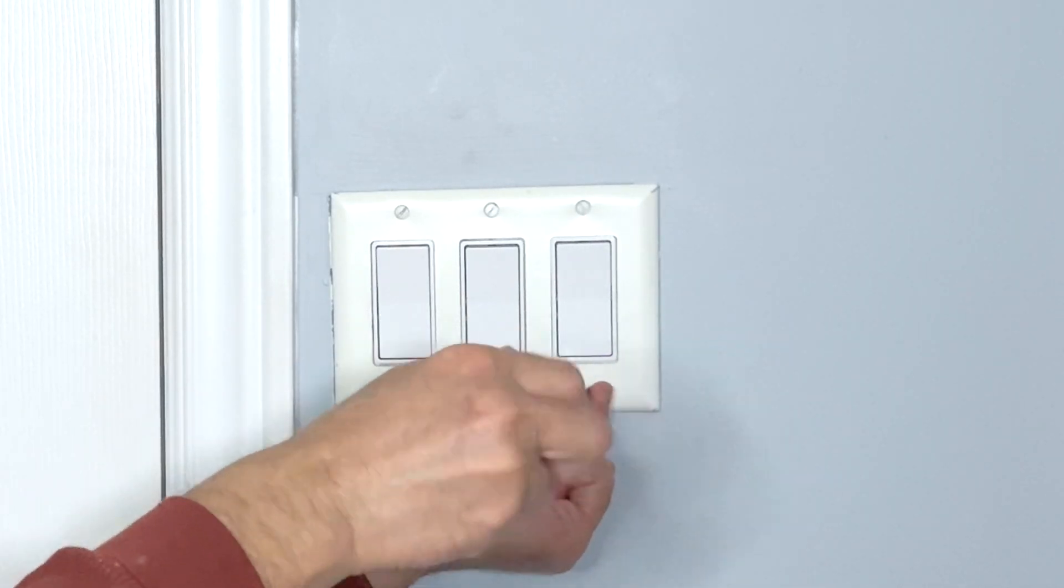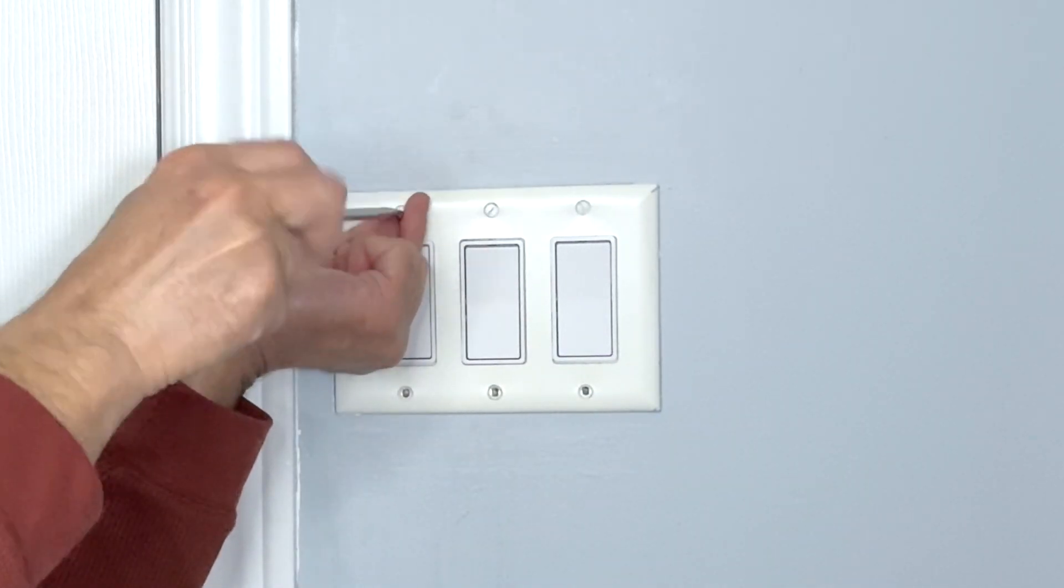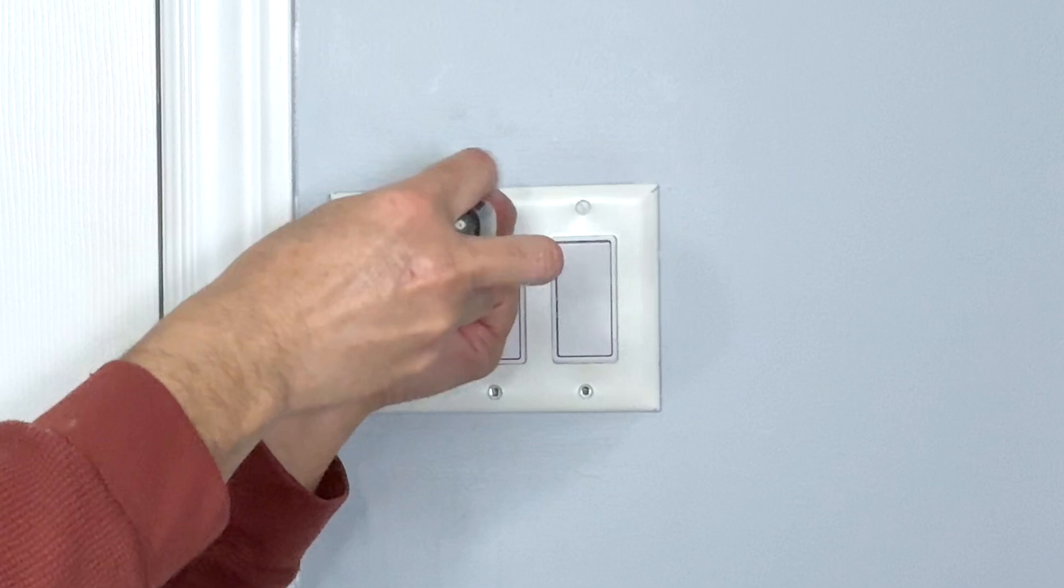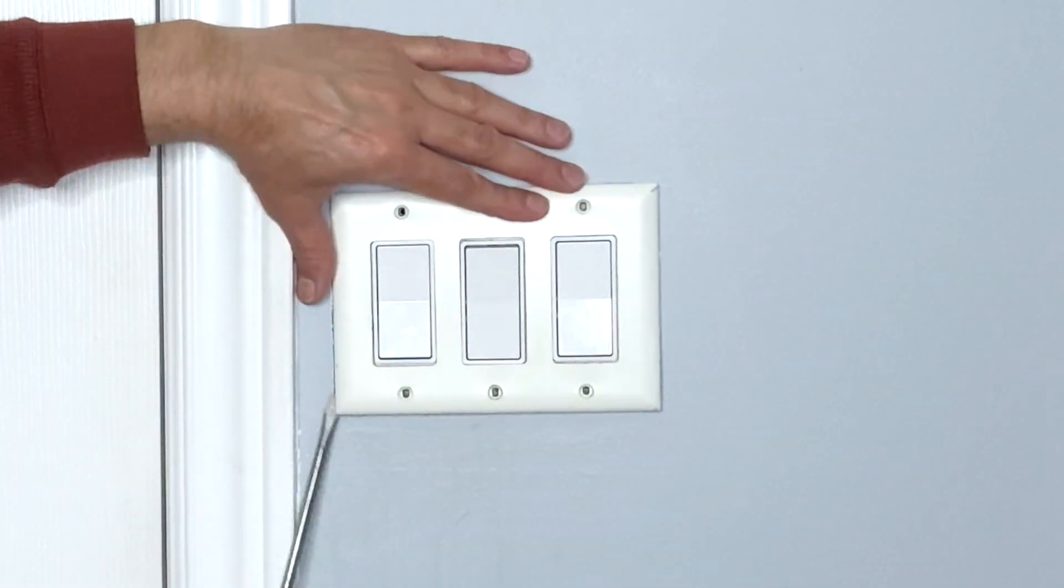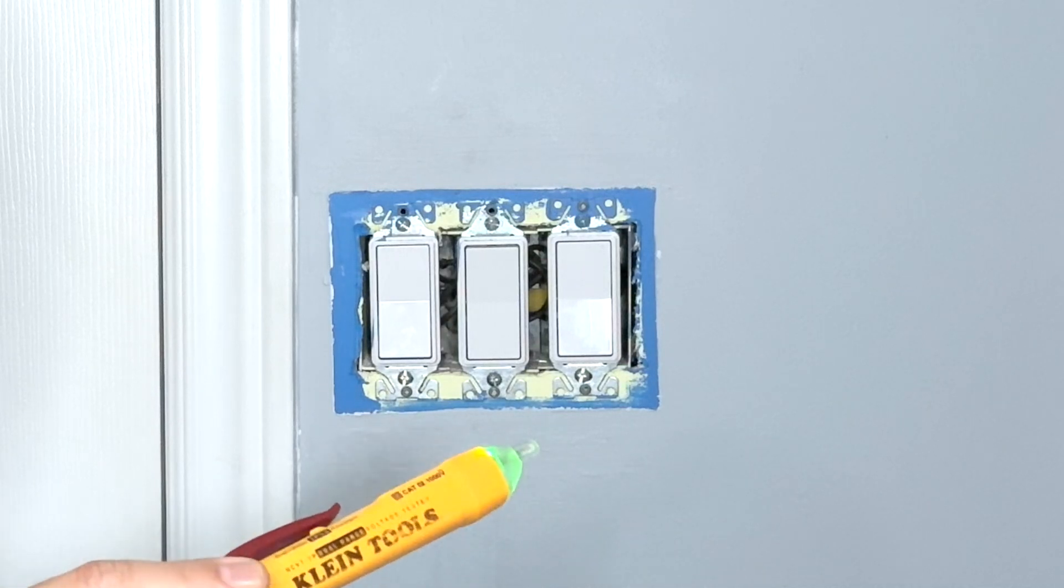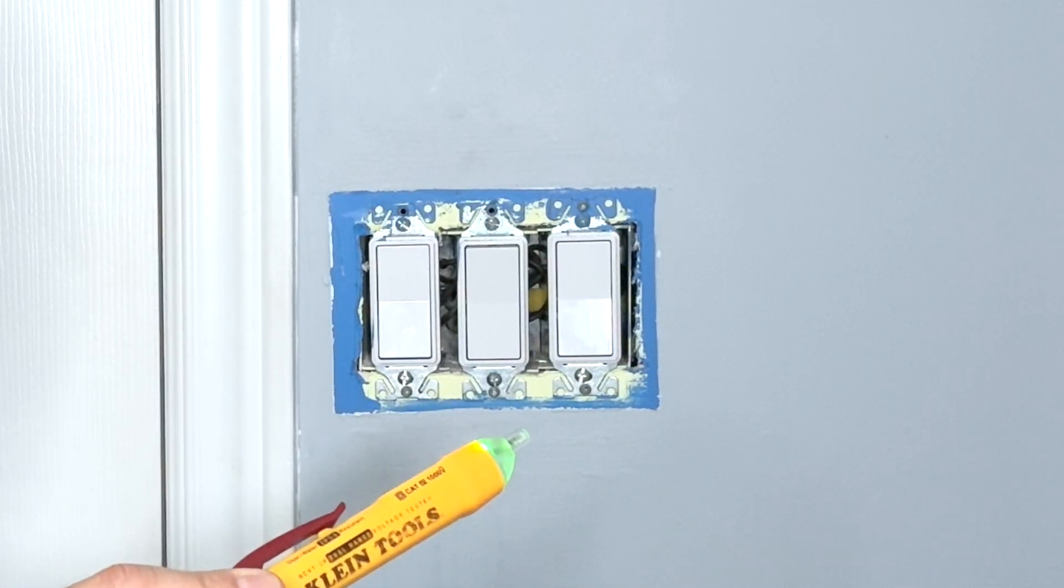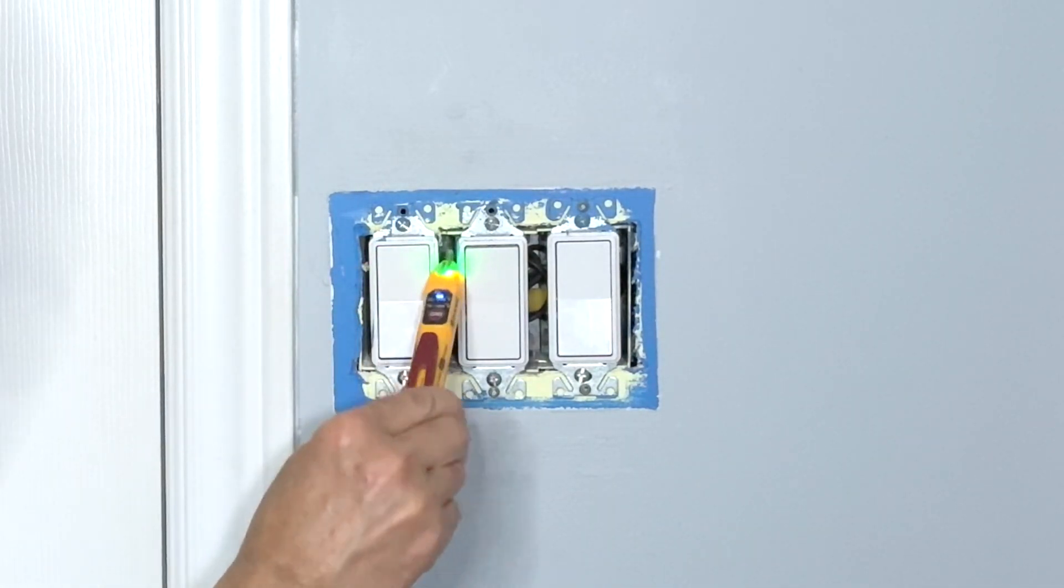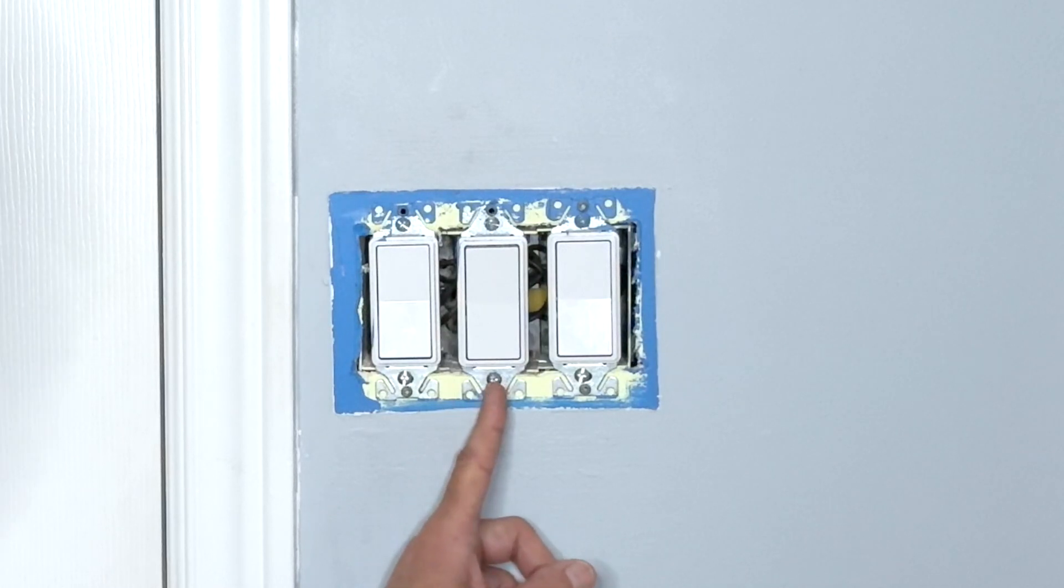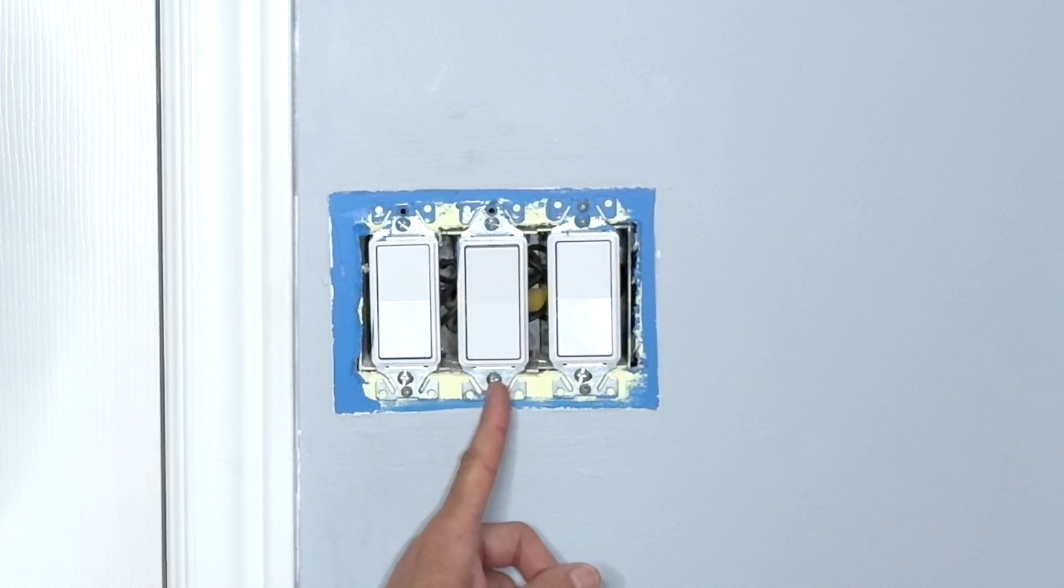When removing the wall plate make sure you keep an eye on these small screws. If they fall down and you lose them it's very difficult to find them on the floor. Safety first, I will use my Klein tools non-contact voltage tester to make sure that there's no power inside the switch box.